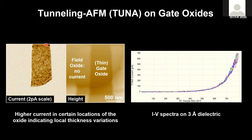One could also do IV spectroscopy at selected points. Here are a couple of IV spectra collected on a three-angstrom, very thin dielectric. The current starts to flow at relatively low voltages, showing nice repeatability in this particular oxide.